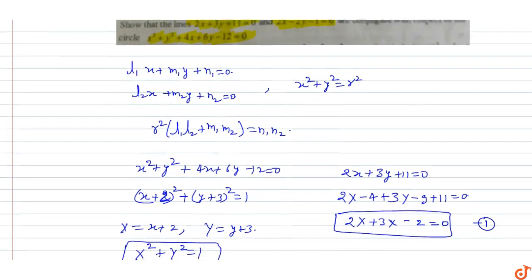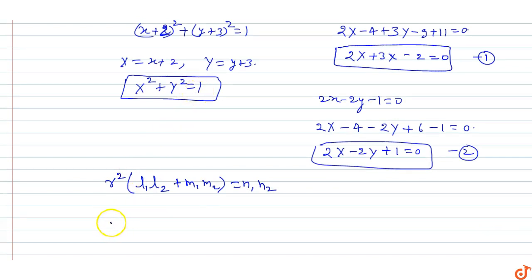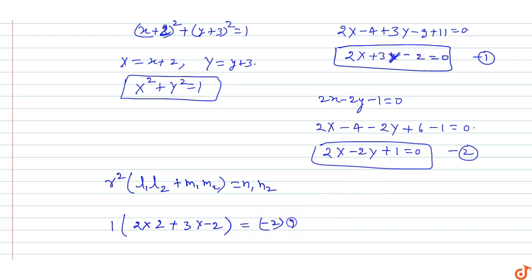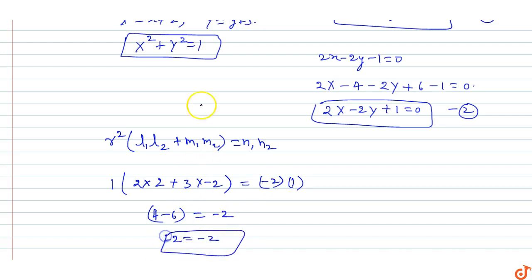Now we verify the conjugate condition r²(l1·l2 + m1·m2) = n1·n2 with respect to X² + Y² = 1 (r² = 1). Here l1 = 2, l2 = 2, m1 = 3, m2 = −2, n1 = −2, n2 = 1. So LHS = 1 × (2×2 + 3×(−2)) = 4 − 6 = −2. RHS = (−2) × 1 = −2. Since LHS = RHS = −2, the condition is satisfied.